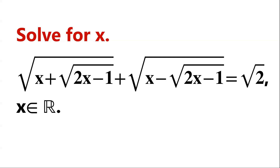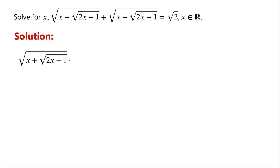Solve this radical equation, where x is a real number. To solve a radical equation, usually the first step is to remove the radicals by isolating the radical expressions and raising the equation to the power of the index. This process will result in a resulting equation. Then solve the resulting equation.